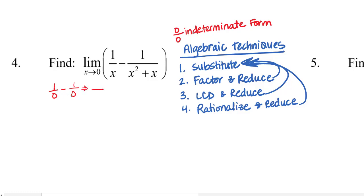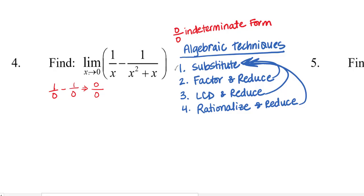If we were subtracting fractions with a common denominator, we'd keep that denominator and subtract across the numerators, leaving zero over zero — the indeterminate form. So I know there's algebra needed here. Substitution didn't work. Factoring the denominator doesn't really change the fact that the fraction is one over zero. So this is going to involve common denominators — let's try combining the two fractions into one so I can then substitute in zero.